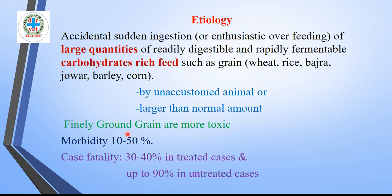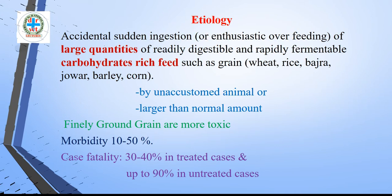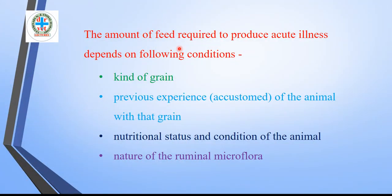Finely ground or flour grain are more toxic because they provide more surface area for digestion. Morbidity is 10 to 50%. Case fatality is 30 to 40% in treated cases and up to 90% in untreated cases, demonstrating the severity of this disease. Such cases occur frequently in the field, especially after ripening of crops such as wheat, jowar, and bajra.